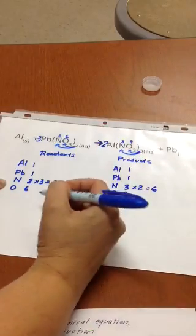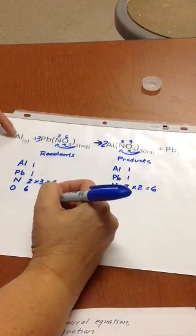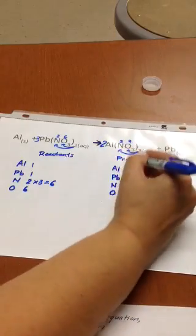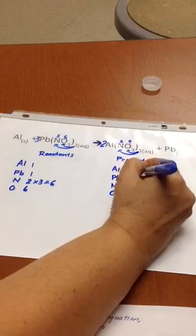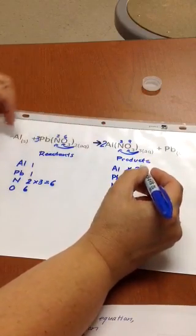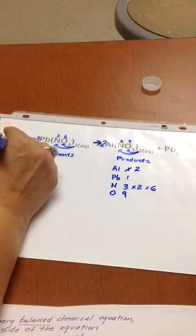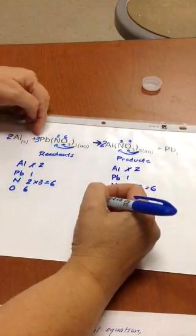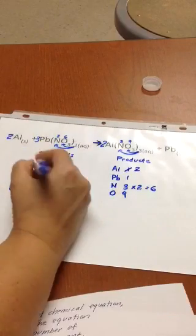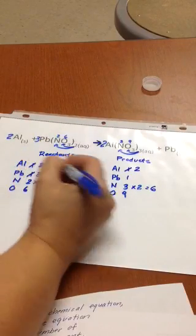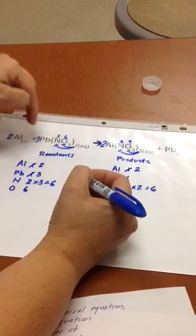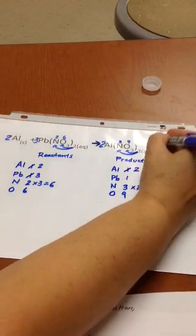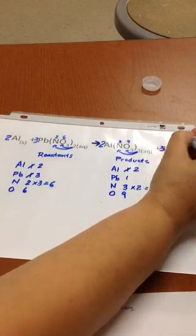And now I'm going to recalculate the atoms that I have. I have one Al on this side, and now I have two Als on this side. So I go back, and I fix this side easily by placing a two in front of the Al. Now, I have three Pbs on this side. When I altered my Ns and Os, I altered the Pb that's connected there. And so over here, I need to have three Pbs.